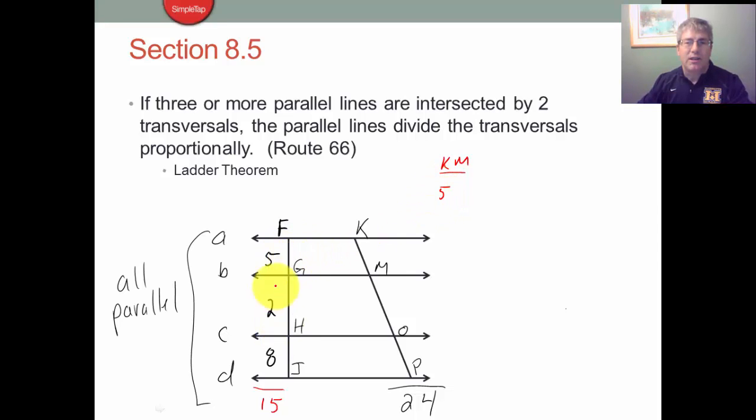5 out of the 15 is the same as KM is out of 24.